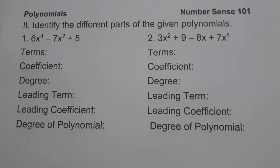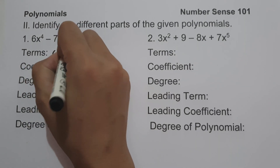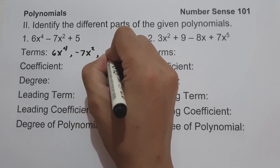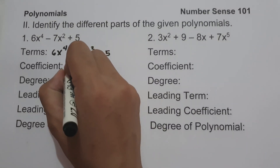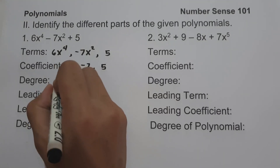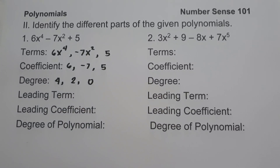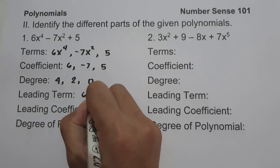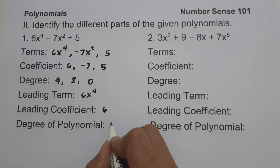Number 1: 6x raised to 4 minus 7x squared plus 5. The different terms are 6x raised to 4, negative 7x squared, and 5. The coefficients of each term are 6, negative 7, and 5. The degrees of each term are 4, 2, and 0. The leading term, which has the highest degree, is 6x raised to 4. The leading coefficient is 6, and the degree of the polynomial is 4.